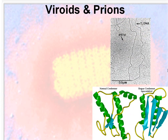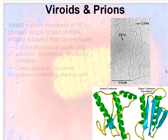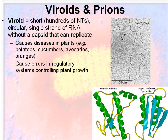Now there are a couple of unique entities called viroids and prions — not quite viruses, but somewhere in between. A viroid is really short, just hundreds of nucleotides long. They're circular, single strands of RNA that do not have a capsid, yet they can replicate — almost like a rogue RNA. They are often seen causing diseases in plants, like potatoes, cucumbers, avocados, and oranges.